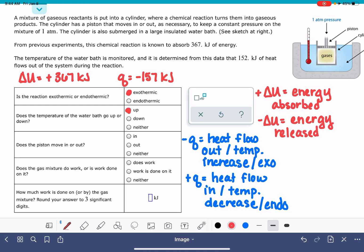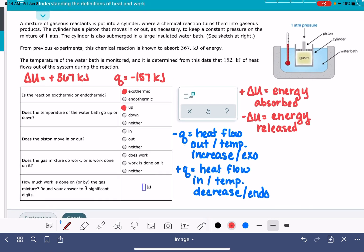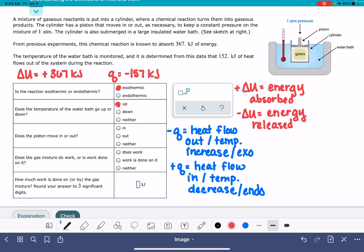Does the piston move in or out? So this has to do with the work of the system. The movement of the piston has to do with whether the gases are being compressed or whether the gases are being expanded. If we have a negative value of work, this means that the gases are compressed. This means that—oh no, I said that backwards. If we have a negative value of W, this means that our gases are expanding. The system is losing energy by expanding the gases. And this would mean that in this situation, the piston would go out to make room for the gases expanding.